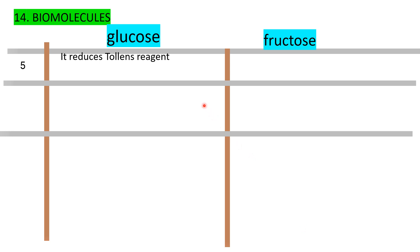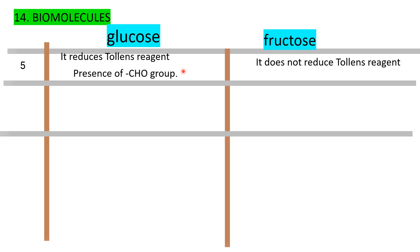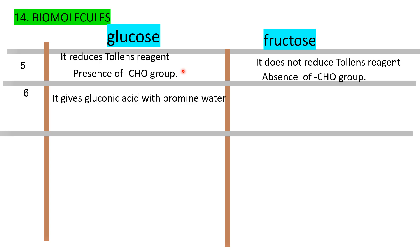Both glucose and fructose reduce Tollens' reagent. Glucose gives gluconic acid with bromine water — indicating the presence of a CHO (aldehyde) group at the first carbon.